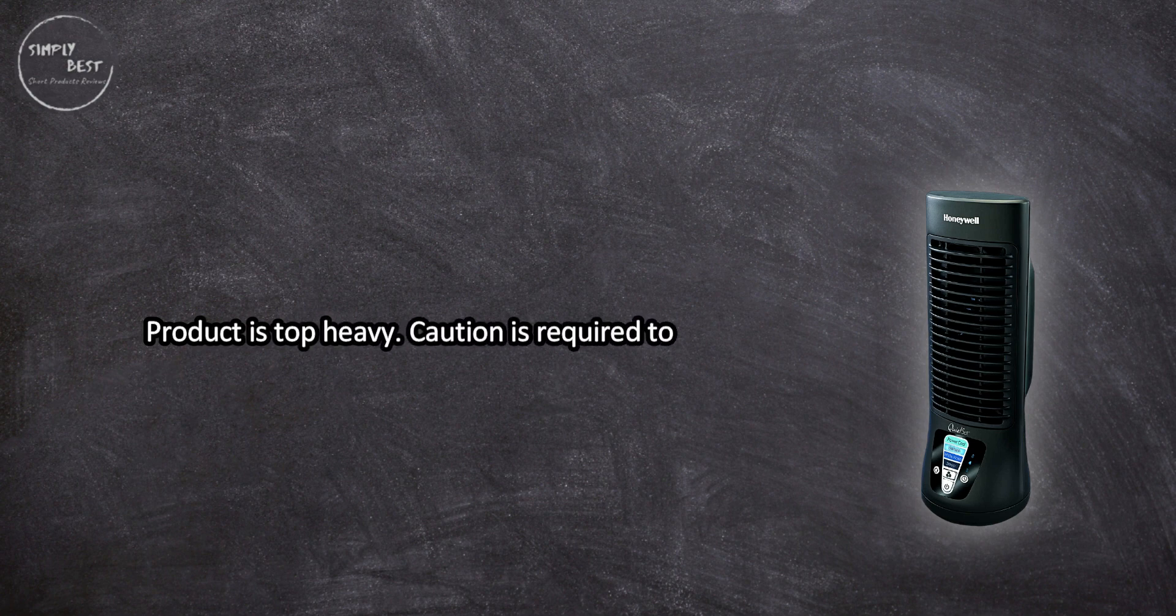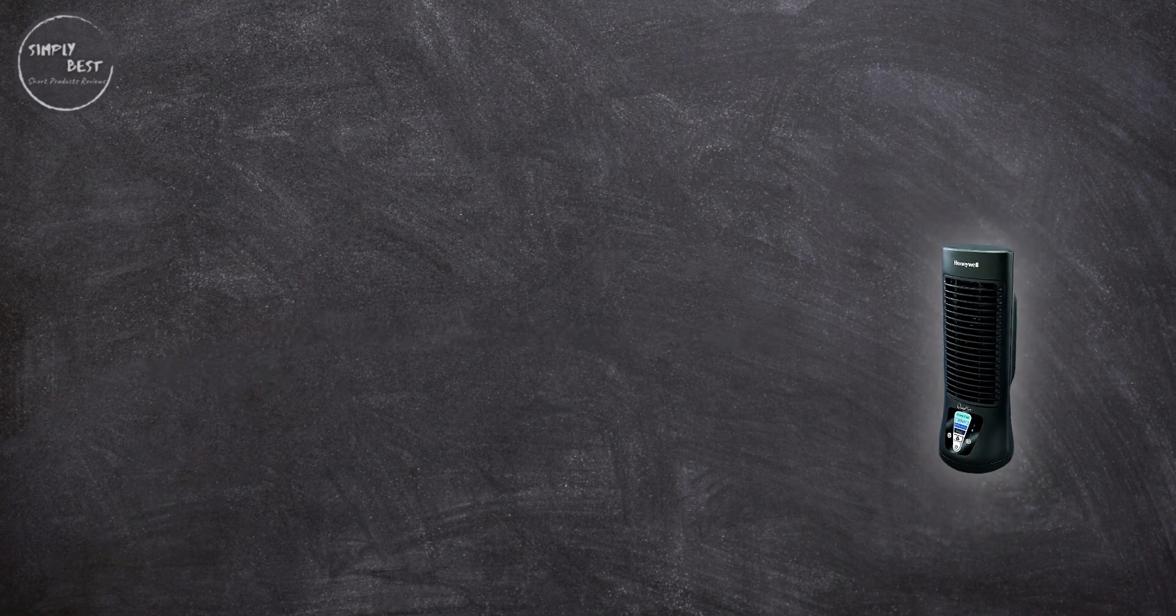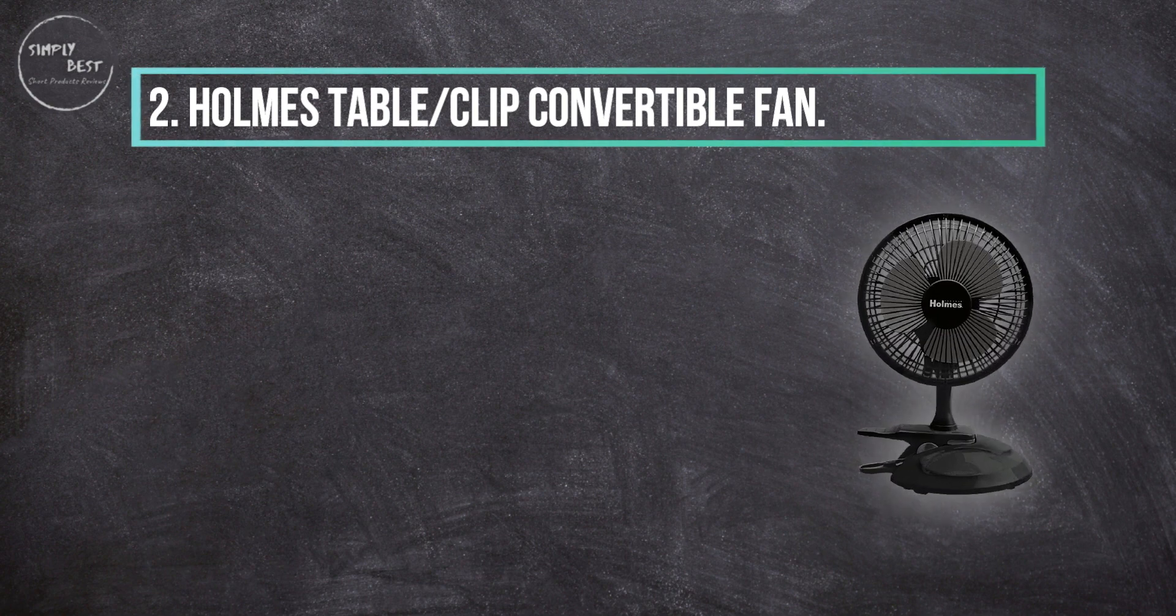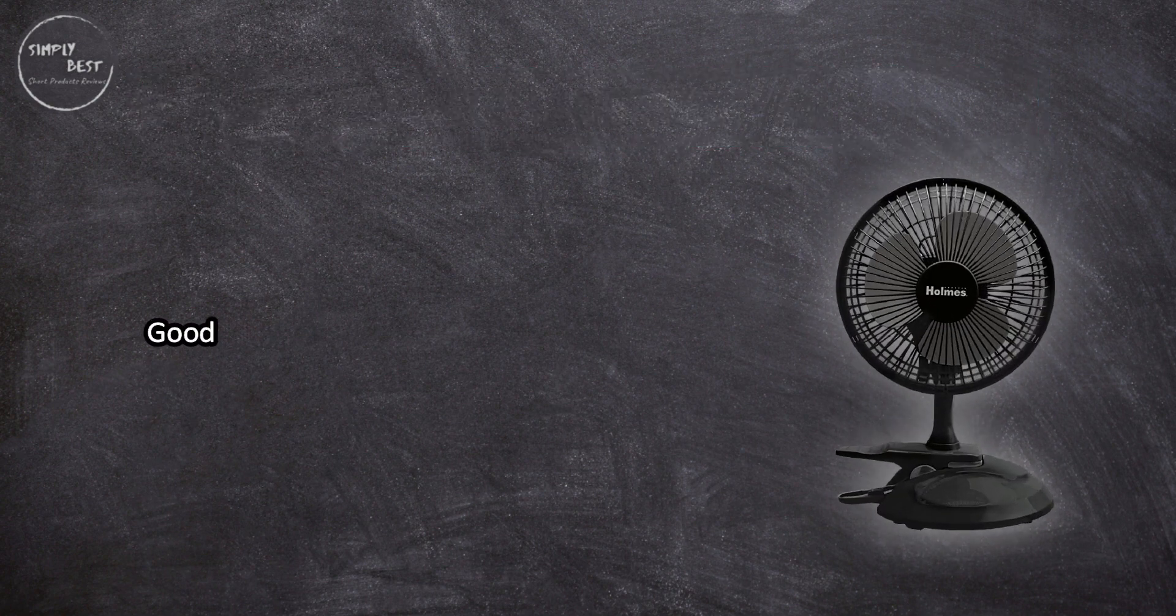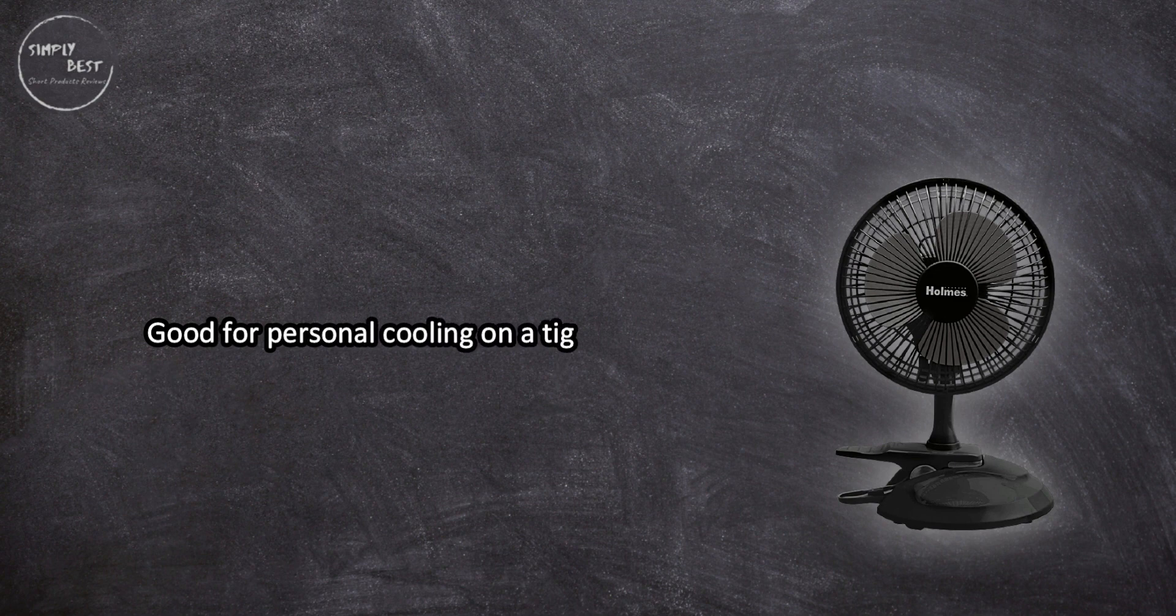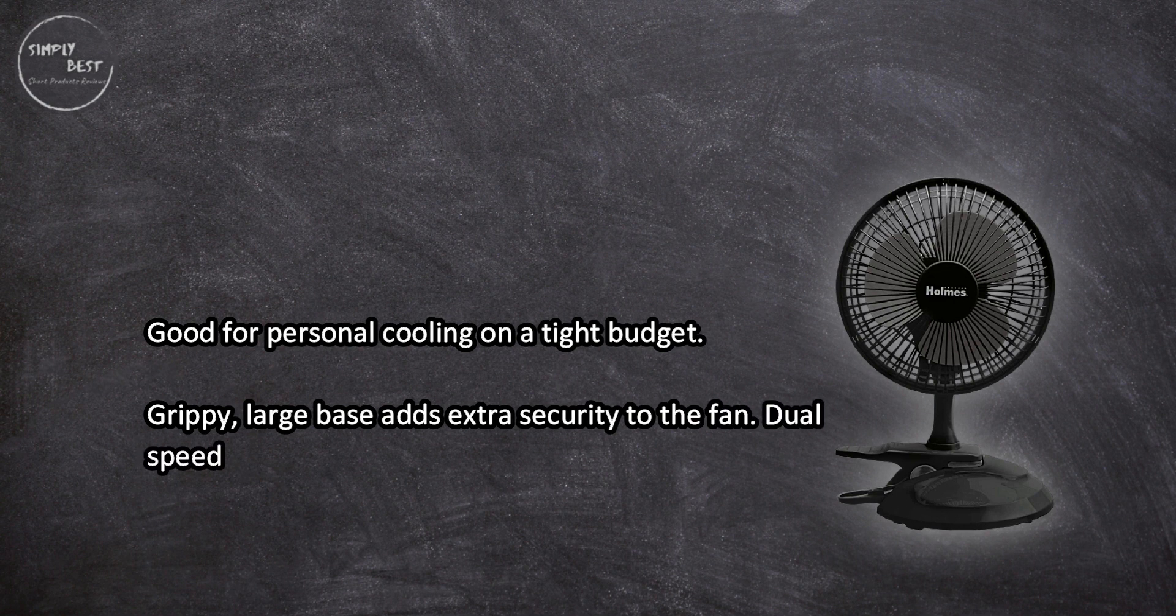At number two, Holmes Table Clip Convertible Fan. Good for personal cooling on a tight budget. Grippy large base adds extra security to the fan. Dual speeds for warm to hot days, small enough to fit on other surfaces.